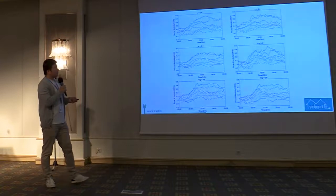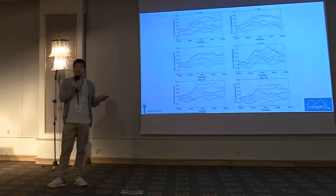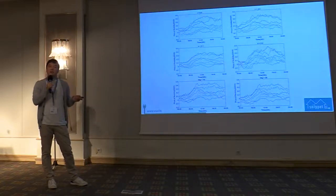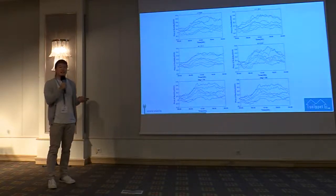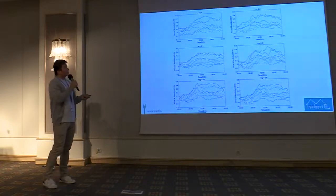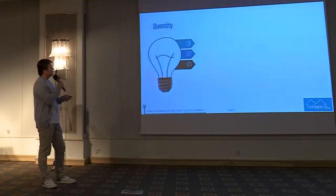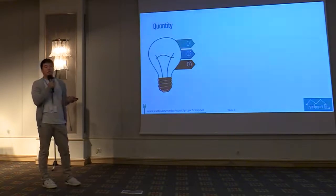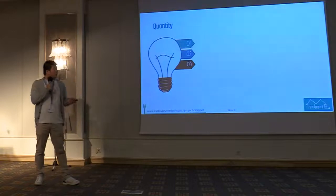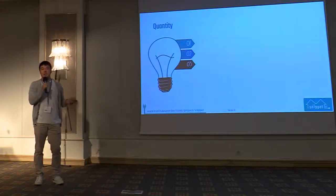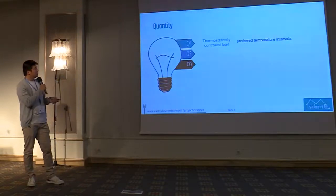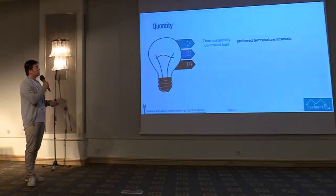Now we have the reference price, and with this we can fit into a neural network or other data-driven method to predict the next day's flexibility price. Since we have the price signal for the bid, now we need to determine how much flexibility to provide. I divide house-level flexible devices into three categories: one is the thermostatically controlled load, where we interpret the user's comfort level as preferred temperature intervals.